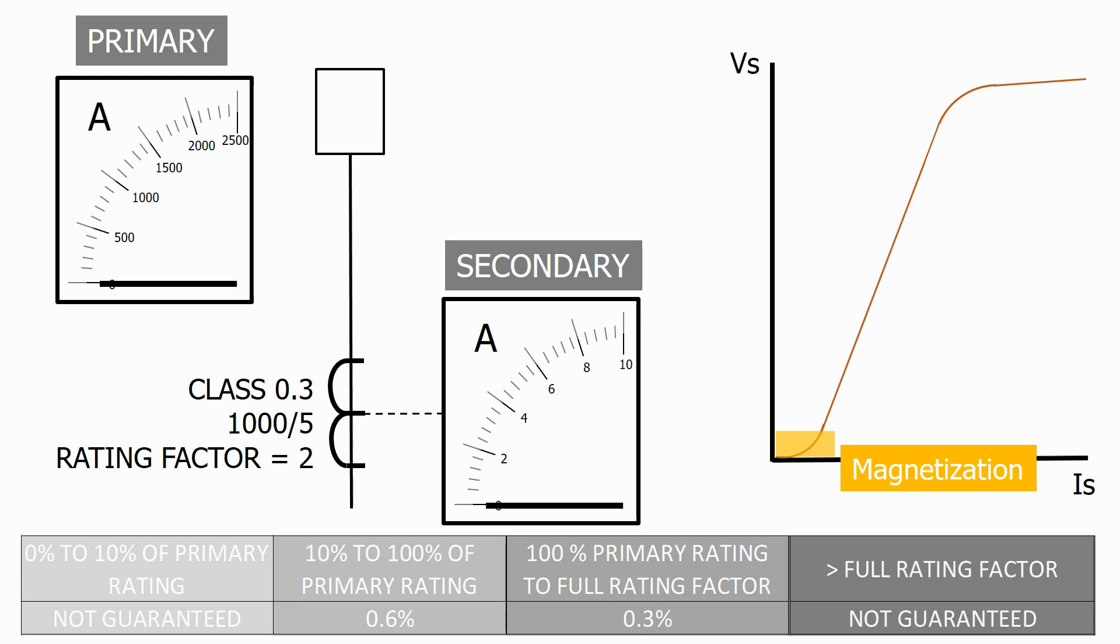Once the CT is magnetised we have a long linear zone that's applicable for most of the current transformer's range. Eventually when the current transformer gets beyond its limits it starts going into the non-linear saturation zone.